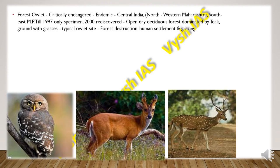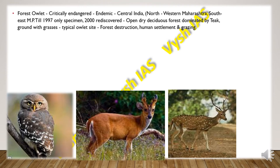Then we have the Forest Owlet, which is critically endangered and endemic to central India, specifically northwestern Maharashtra and southeastern Madhya Pradesh. Until 1997 only one specimen was found, but it was rediscovered in 2000. They are found in open dry deciduous forests dominated by teak trees with a grassy ground cover. The major threats are forest destruction, human settlement and grazing.